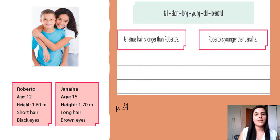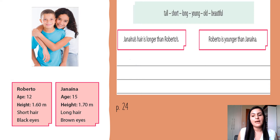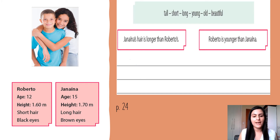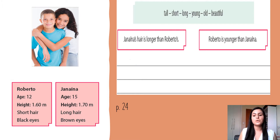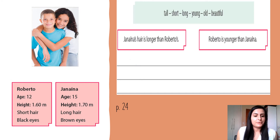Here I have two siblings, Roberto and Janaína. And I have here their ages, height, the color of the hair, the eye color. So we are going to compare them. Let's read the information about Roberto and Janaína. Roberto: age 12, height 1.60, short hair, black eyes.